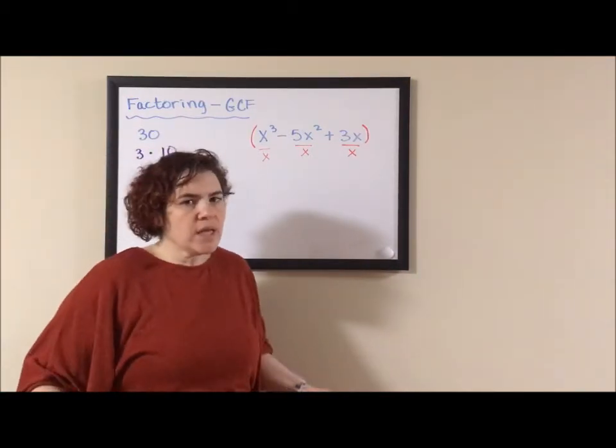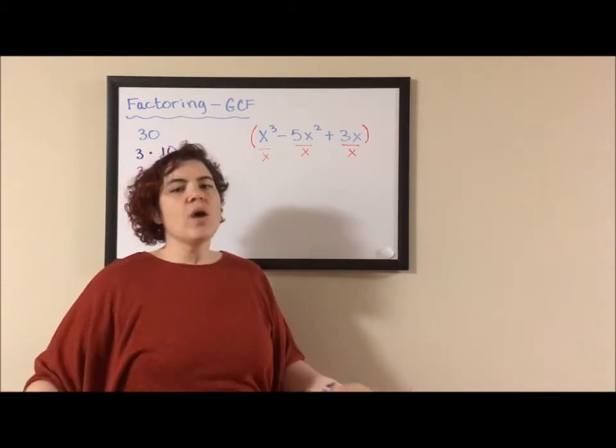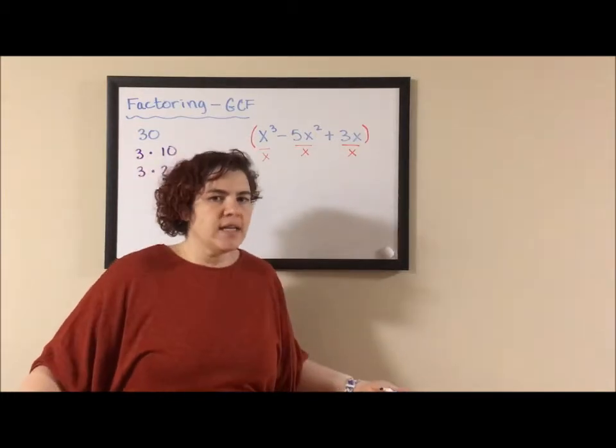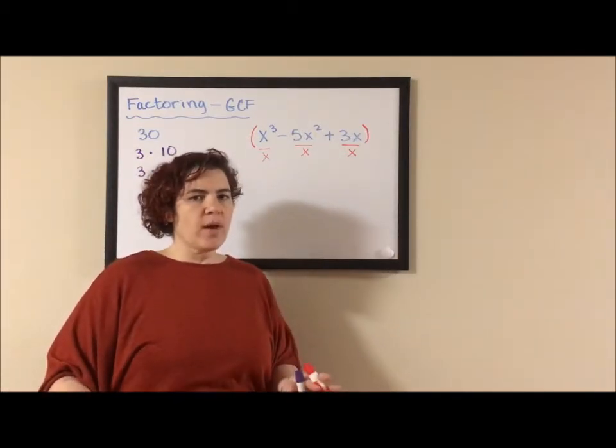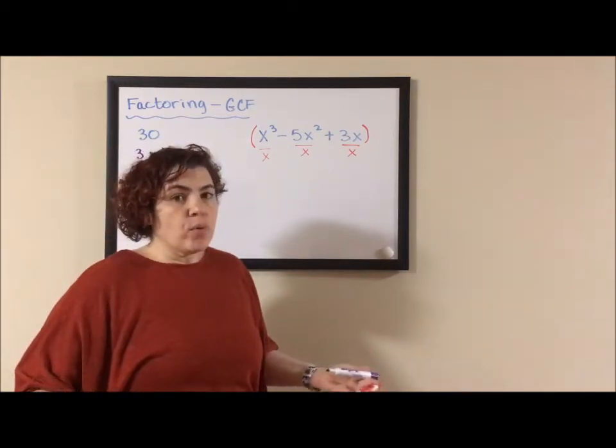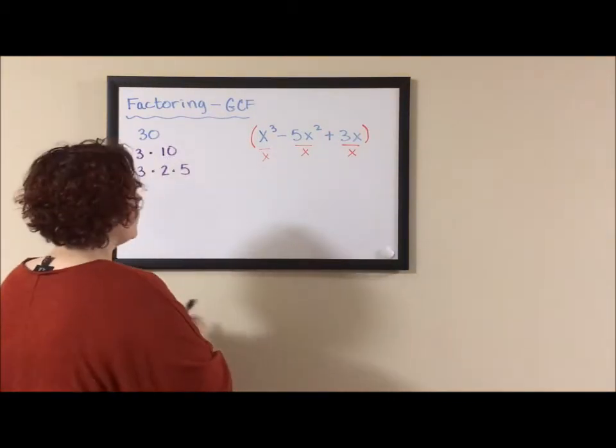Because I don't have an equal sign, the x doesn't just go away. Equal signs allow you to balance your equation and actually divide things out from both sides. We don't have both sides. We're reorganizing. It's like cleaning up our room and moving your furniture and stuff around. We want to take that x and bring it out front.